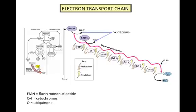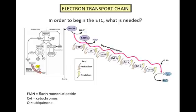Notice that when the electron carriers dump off their electrons at the start of the chain, these are oxidation reactions because the molecules are losing hydrogens and electrons. As a refresher: what is needed to begin the electron transport chain? The electron carrier molecules NADH and FADH2.